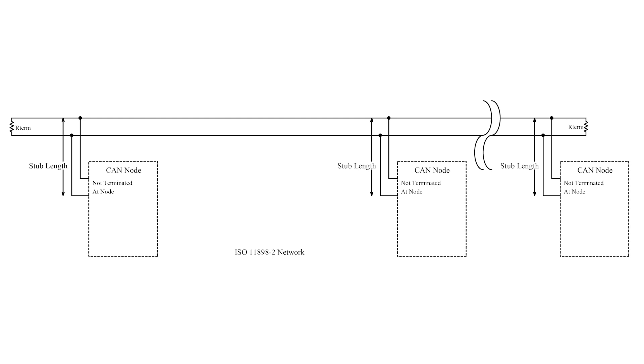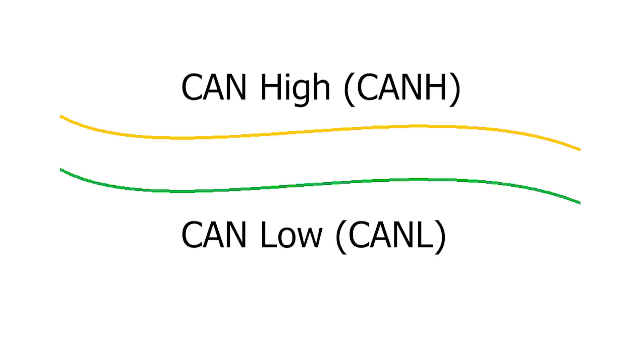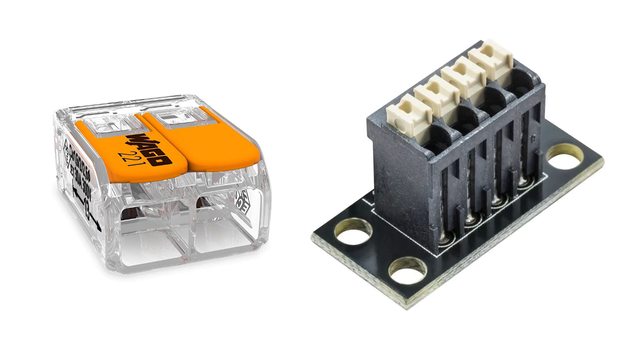CAN works by having two wires called CAN-Low (CAN-L) and CAN-High (CAN-H). However, if either CAN-L or CAN-H becomes unplugged from the RoboRio or cut, you won't be able to send or receive any more data. So make sure your CAN connections are as robust as possible to prevent unplugs. I recommend either Wago 221 lever nuts or CTRE CAN connectors.